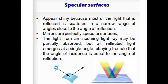The third type of light source is specular reflection. This occurs whenever the angle of incidence is equal to the angle of reflection. Most surfaces appear shiny because most of the light reflected is scattered in a narrow range of angles close to the angle of reflection. Mirrors are the best example for specular reflection. The incoming light ray may be partially absorbed, but all the reflected light emerges at a single angle obeying the rule that angle of incidence equals angle of reflection.